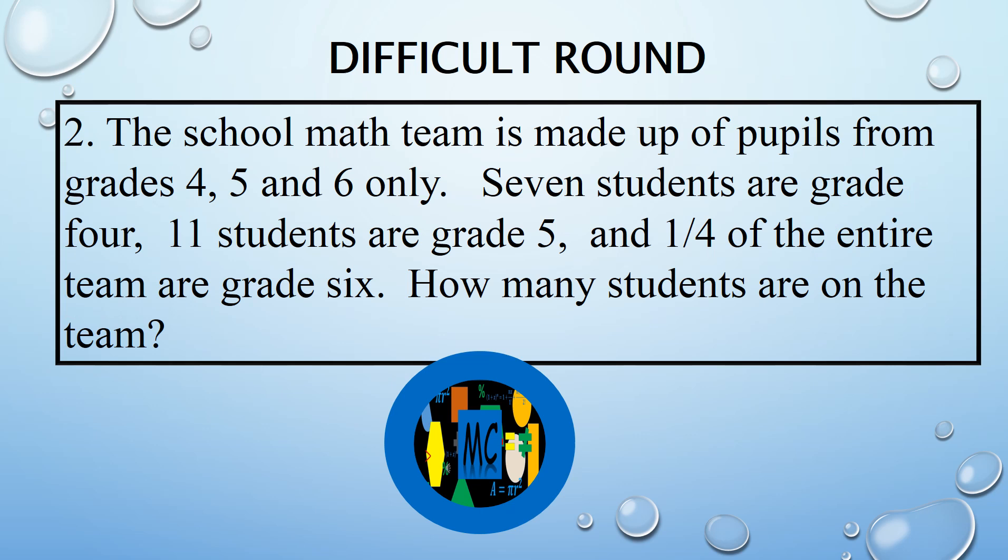The school math team is made up of pupils from grades 4, 5 and 6 only. 7 students are grade 4, 11 students are grade 5, and one fourth of the entire team are grade 6. How many students are on the team?